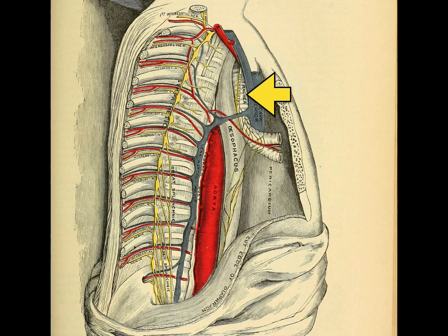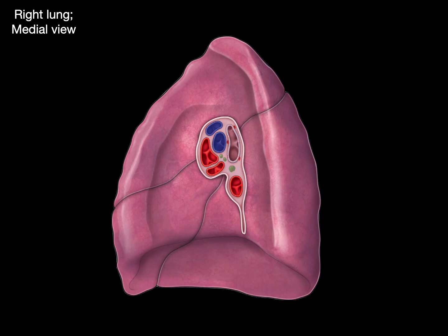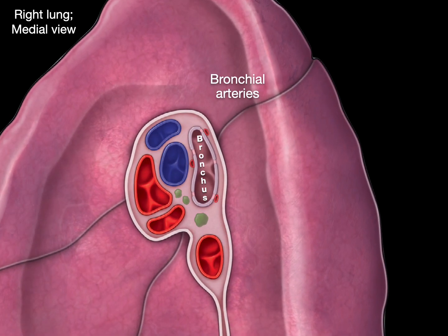Looking at a picture from Gray's Anatomy, we can see the trachea branching into the right primary and right secondary bronchi. There is a bronchial artery visible, and in this case it is coming off of an intercostal artery. In a medial view of the right lung, there's a bronchus, and those three circles in cross-section are bronchial arteries.